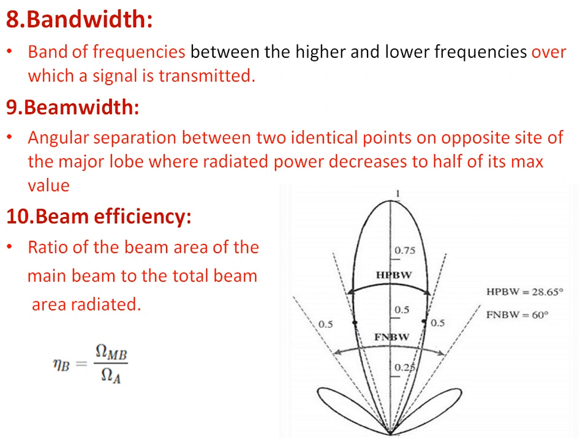The next is beam efficiency. Beam efficiency is simply the ratio of the beam area of the main beam to the total beam area radiated. The area under the main beam is the beam area, and beam efficiency is the ratio of that to the total beam area radiated.